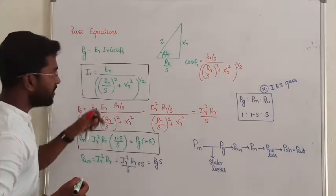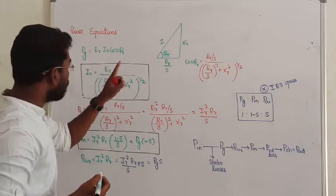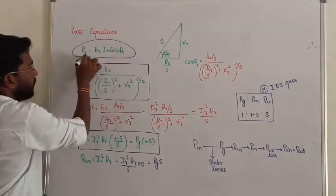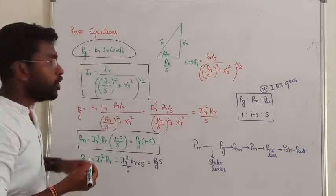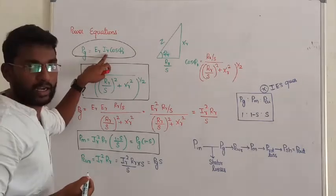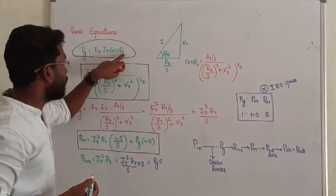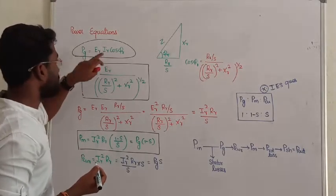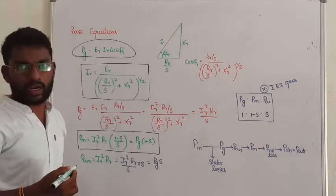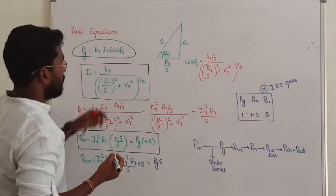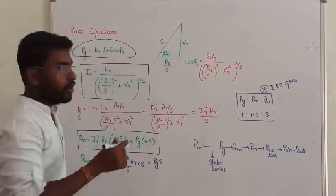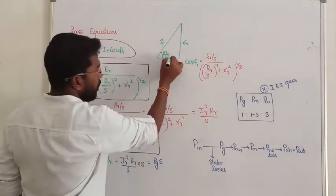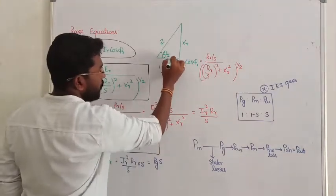Let us see the power equations one by one. The power flow diagram is important. The rotor developed power equals rotor EMF into rotor current into power factor cos φ_R — that is, the phase difference between rotor voltage and rotor current. Rotor current impedance is defined by the law. That is, rotor resistance is R_R by S.